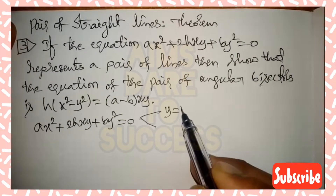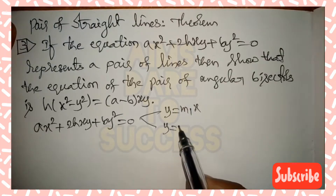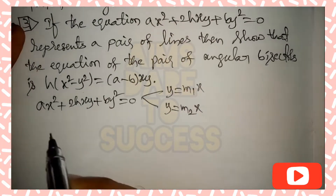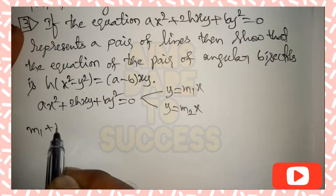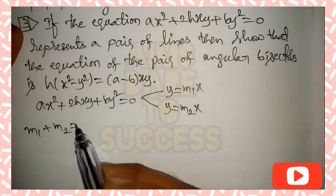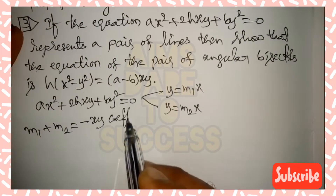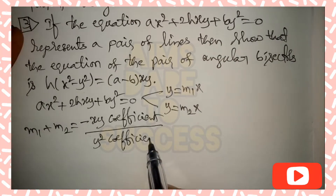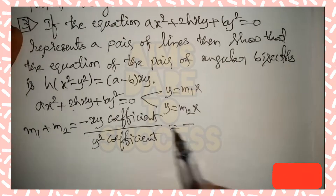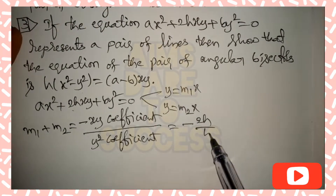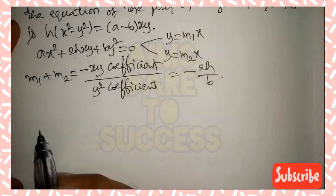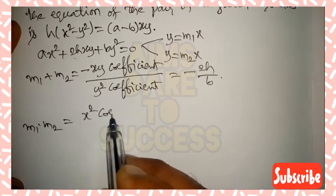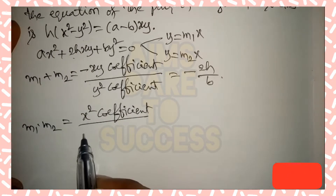For ax² + 2hxy + by² = 0 as a pair of lines, we take y = m₁x and y = m₂x as the two lines. The sum of the roots: m₁ + m₂ equals minus the xy coefficient divided by the y² coefficient, so minus 2h divided by b. The product of the roots: m₁ · m₂ equals the x² coefficient divided by the y² coefficient, which is a divided by b.